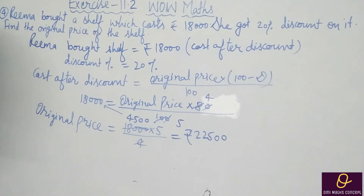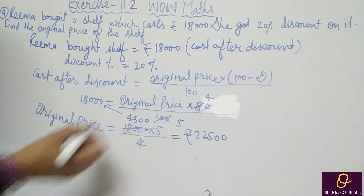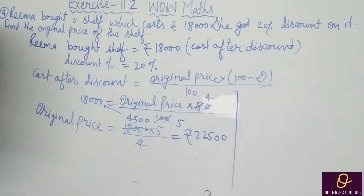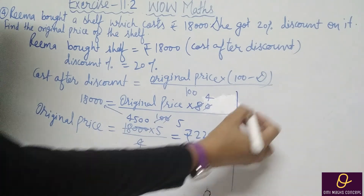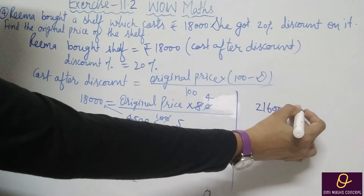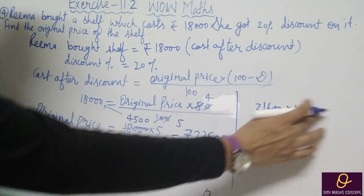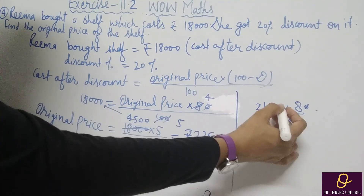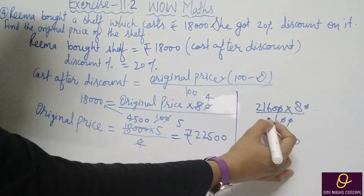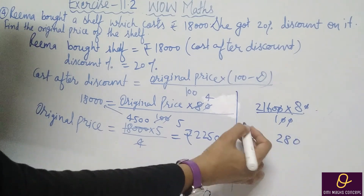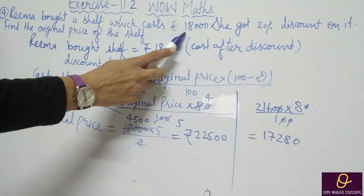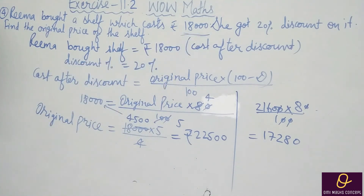In the book the answer given is Rs. 21,600. Let's verify: if MRP is 21,600 and we apply 20% discount, 21,600 into 80 divide by 100 gives 17,280 — but our question says Rs. 18,000. So the book answer of 21,600 is wrong; the correct original price is Rs. 22,500.